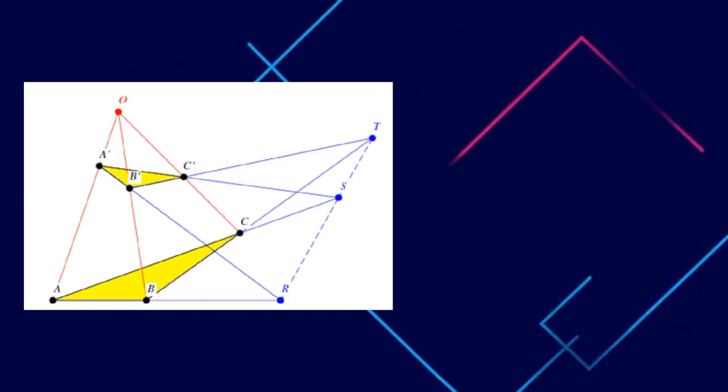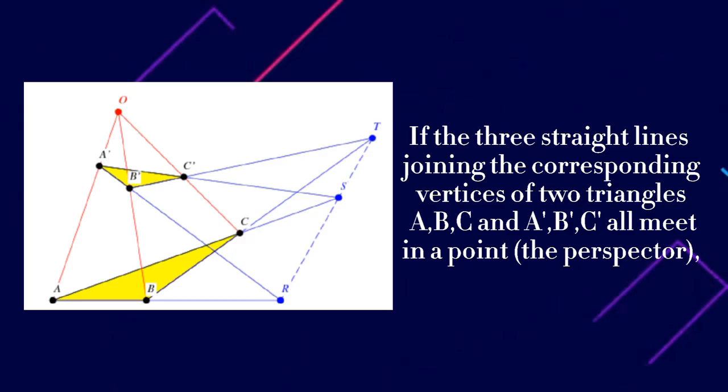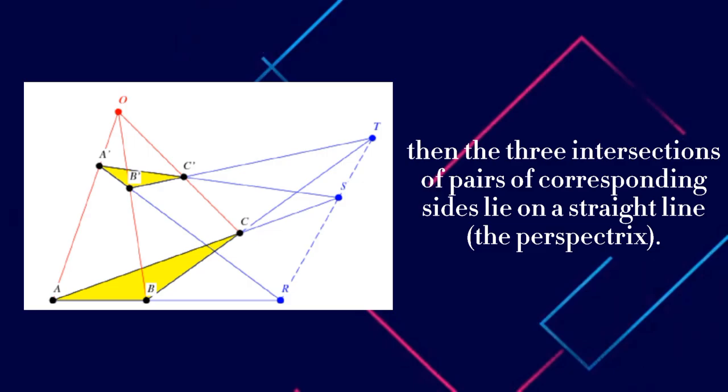So how will we know if it is a Desargues configuration? If the three straight lines joining the corresponding vertices of two triangles ABC and A'B'C' all meet in a point (are perspector), then the three intersections of pairs of corresponding sides lie on a straight line (are perspectrix). Equivalently, if two triangles are perspective from a point, they are perspective from a line.